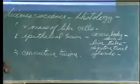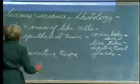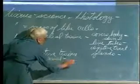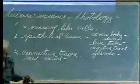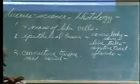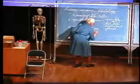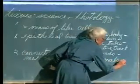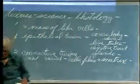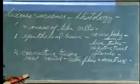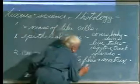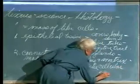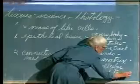Connective tissue is the most varied of your tissues. Connective tissue is characterized by cells, fibers, and a matrix. The word you perhaps don't know is matrix - it's the intercellular substance. So it's going to differ with each type of connective tissue.